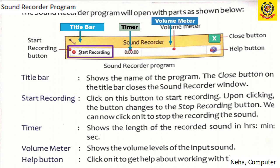Next is the volume meter. The volume meter shows the volume levels of the input sound — the audio being recorded. It will increase or decrease to show the volume levels. Next is the help button. This is how we can run the Sound Recorder program and work with it.